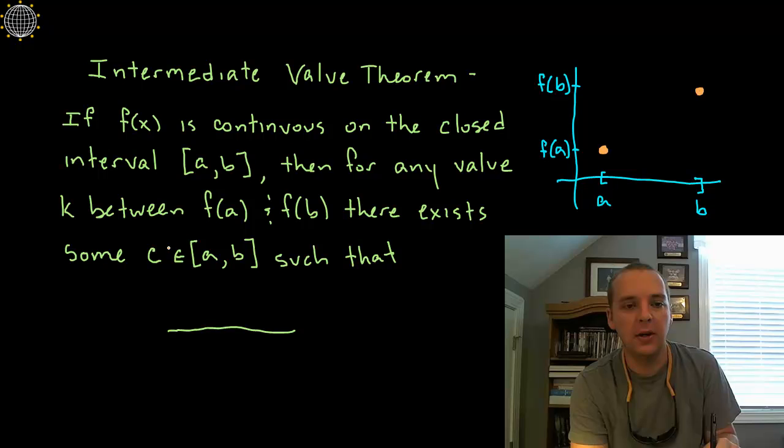there exists some value c in the interval [a,b]. And this right here is a math notation, a math symbol for included or is in the set or in the interval from a to b, such that something happens. And I didn't give you the punchline because I want us to figure it out.